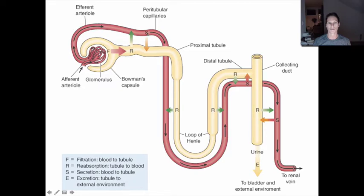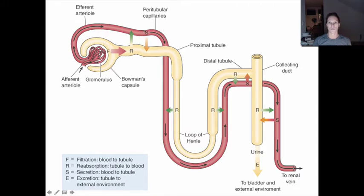Reabsorption is always from the renal tube into the blood supply. The opposite is secretion — from the blood into the tube. These are things that didn't filter, like proteins. Secretion is the main way we excrete toxins and drugs. So the three main processes are: filtration (glomerulus to Bowman's capsule), reabsorption (tube to blood), and secretion (blood to tube).